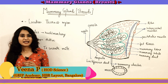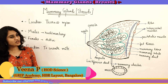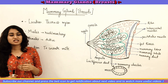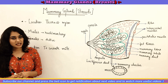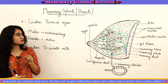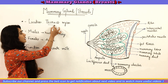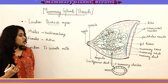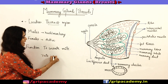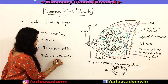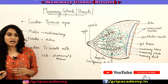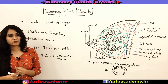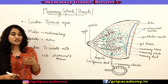In today's video we shall be learning about the structure and function of mammary glands, also called the breast. Before going to the structure, let's discuss its location. In humans, the mammary glands are located in the thoracic region. In cows or buffaloes, they are present in the abdominal region. In rats, they are present in both abdominal and thoracic regions. In humans, they are paired structures made up of glandular as well as fatty tissue.